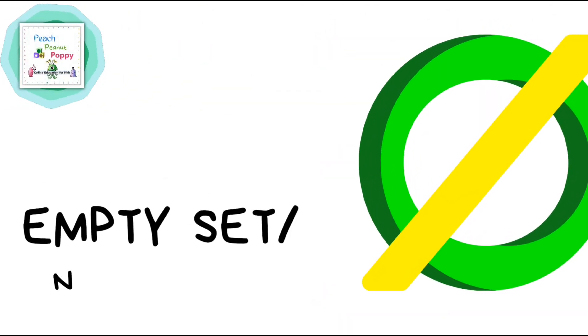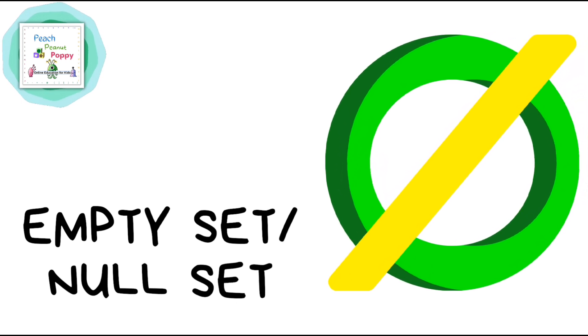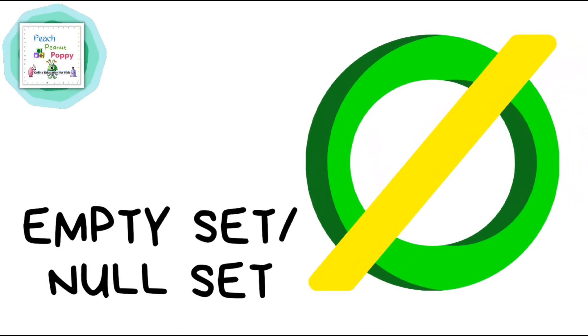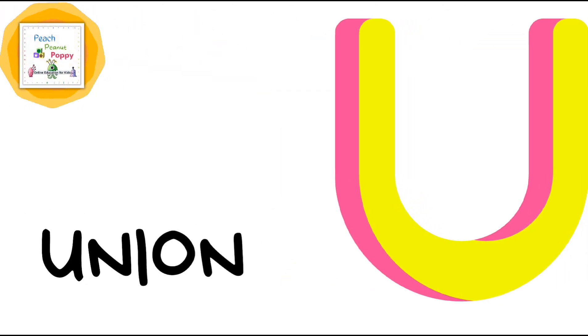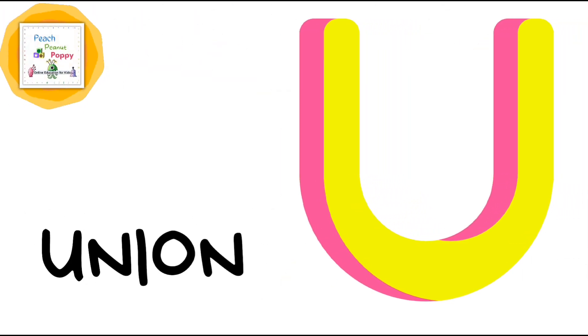Then we have the sign to denote Empty Set or Null Set. Empty Set or Null Set. Next is the sign for Union. Union.